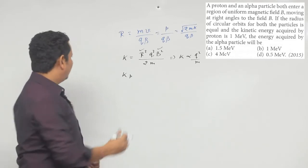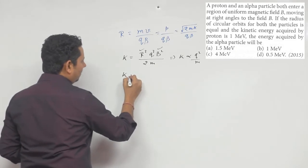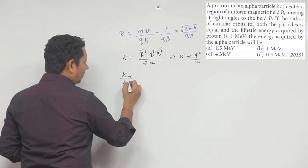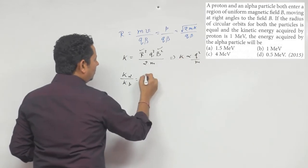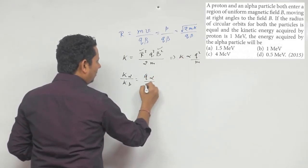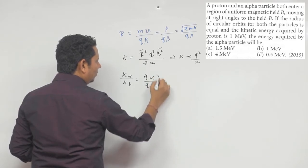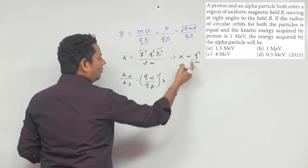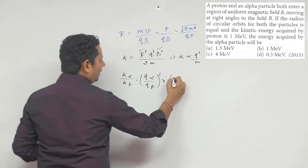aapko alpha particle ki energy batani hai. To hum likhenge: K_alpha / K_proton. Ye hoga (q_alpha / q_proton)², in dono ka charge ka square, multiplied by mass ka inverse ratio, yani ki mass